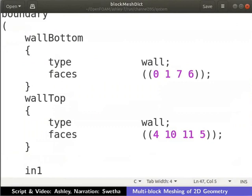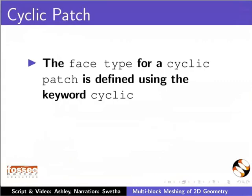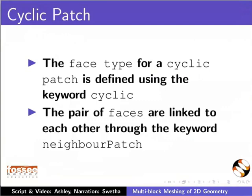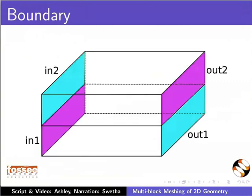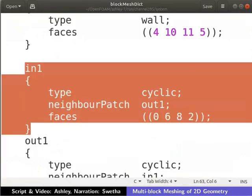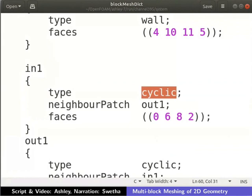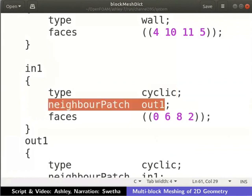We need to enforce cyclic boundary conditions on the inlet and outlet faces of block 1. The face type for a cyclic patch is defined using the keyword cyclic. The pair of faces are linked to each other through the keyword neighbor patch. The inlet and outlet faces of block 1 are named in 1 and out 1 respectively. The same for block 2 are named in 2 and out 2 respectively. The inlet face of block 1 is defined as shown. The boundary face type is cyclic. The outlet face is linked to the inlet face using the keyword neighbor patch.